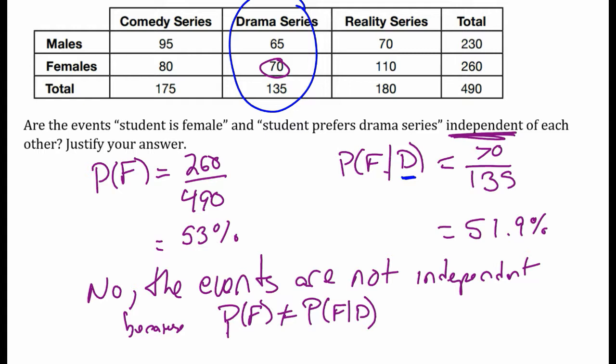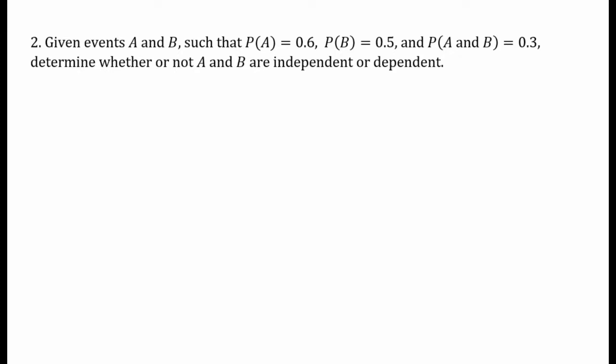You could also say the events are dependent — they are dependent because they are not independent. Number two: given events A and B such that the probability of A is 0.6, the probability of B is 0.5, and the probability of A and B happening is 0.3, determine whether A and B are independent or dependent.